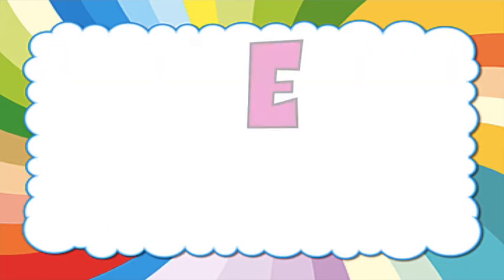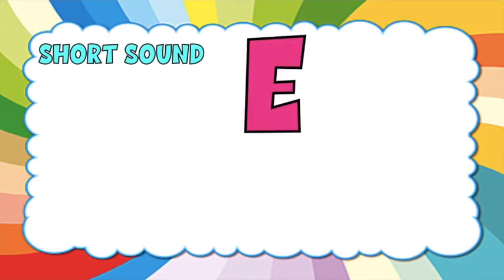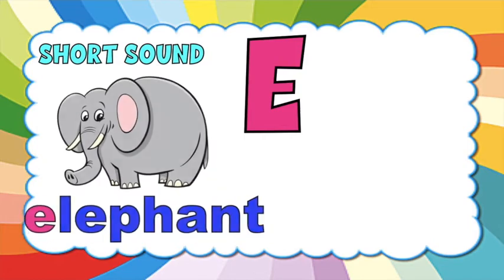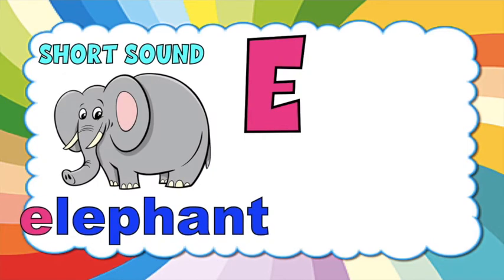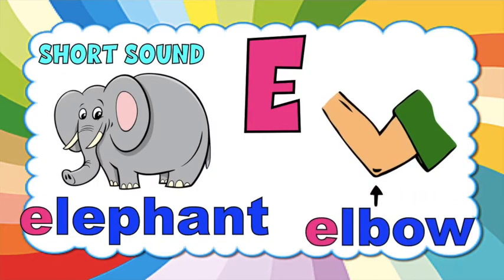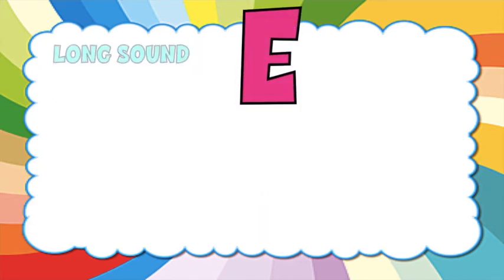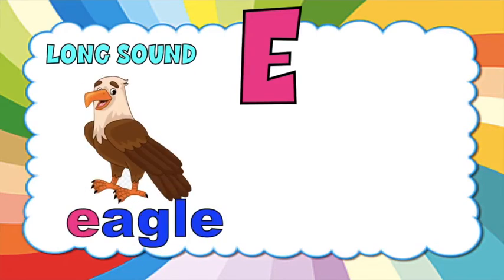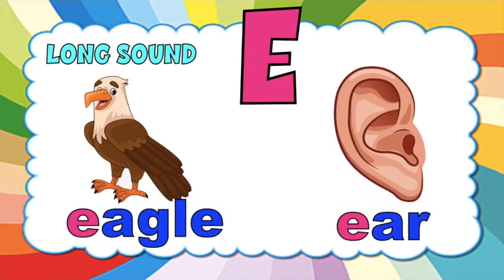Again, let's have the short sound: E — elephant. E — elbow. How about the long sound? E — eagle. E — ear.